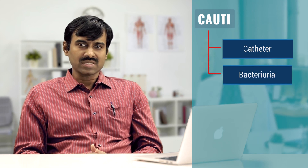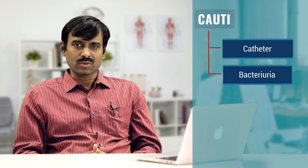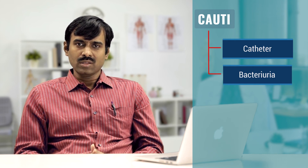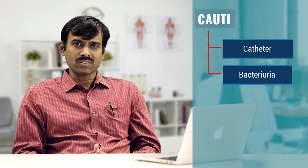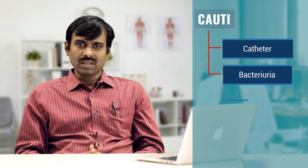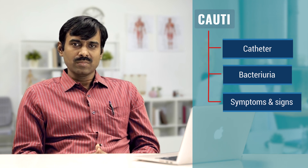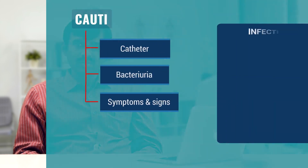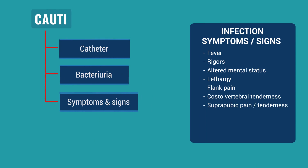Second, bacteriuria — the patient should have significant bacteriuria, meaning the urine culture should show growth of one or more uropathogenic organisms with a colony count of more than 10³. Third, presence of urinary infection signs and symptoms — the patient should have any of the following: fever, rigors, altered mental status, lethargy, flank pain, costovertebral tenderness, suprapubic or pelvic tenderness, hematuria, or dysuria.